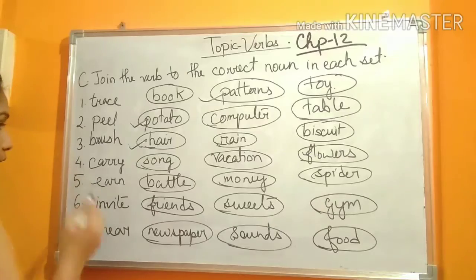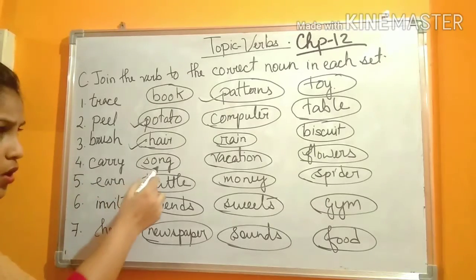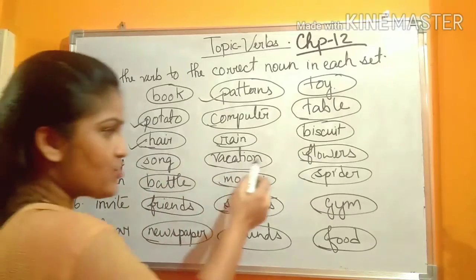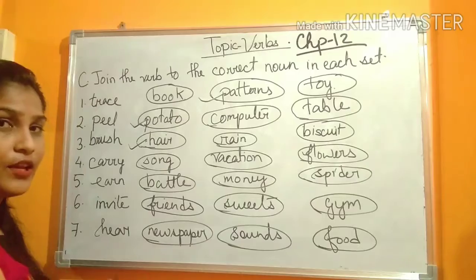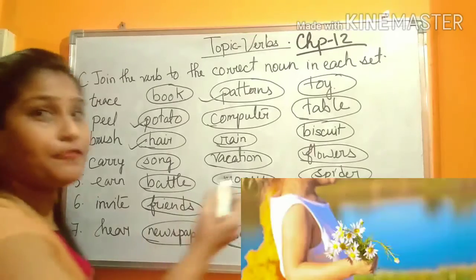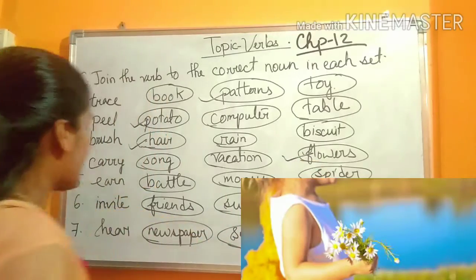Next, number four: Carry. What will you carry? Song, vacation, or flowers? You will carry flowers. So this one will be the correct one.